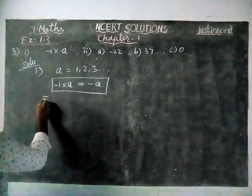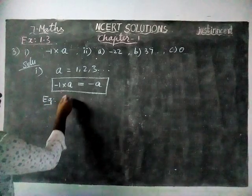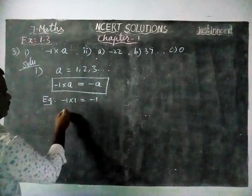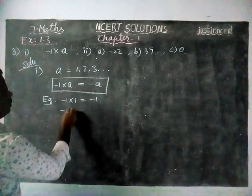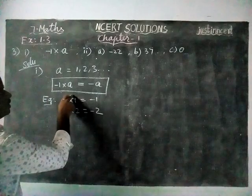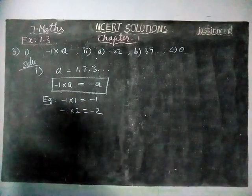Example, we will see. If you are taking minus 1 into 1 is equal to minus 1. If you are taking minus 1 into 2, minus 2. So, what number you are taking as a, the same number you will get in minus sign.